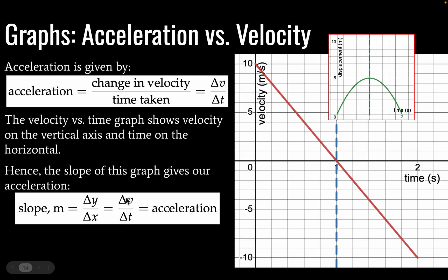And in that case, our change in y will be equal to our change in velocity. And our change in x will be equal to our change in time. So this then is going to give us our acceleration. Note also that m is traditionally the variable given for slope. And I don't believe this is in your data booklet, but it might be. I don't know. This is my first time teaching the course for the new syllabus.